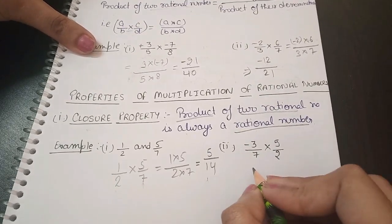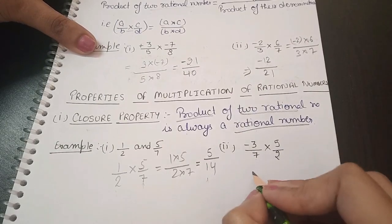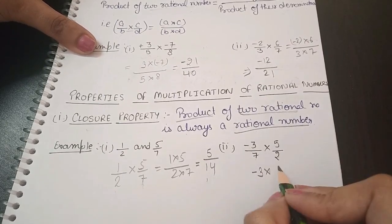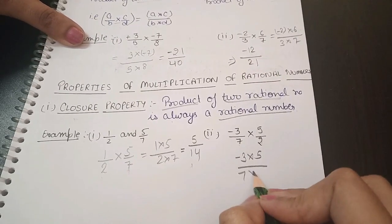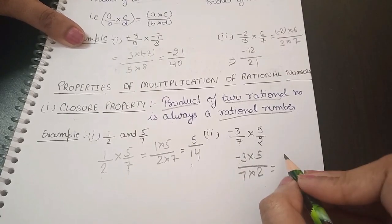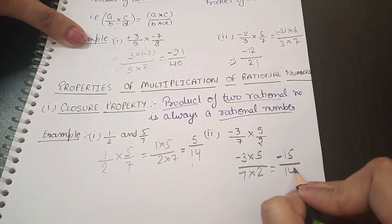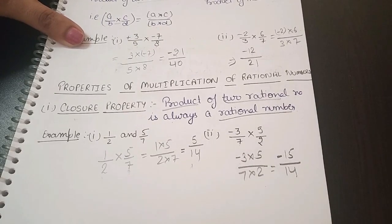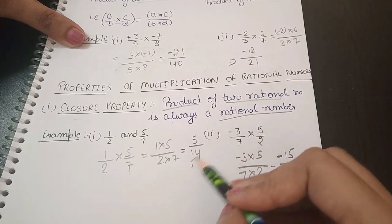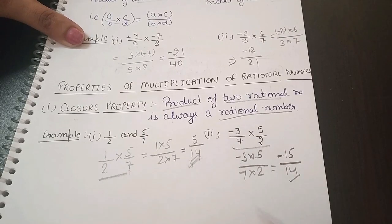Another example: multiply -3/7 and 5/2. Numerators: -3 × 5 = -15. Denominators: 7 × 2 = 14. Result is -15/14, which is a rational number. This proves that when we multiply two rational numbers, the answer is always a rational number.